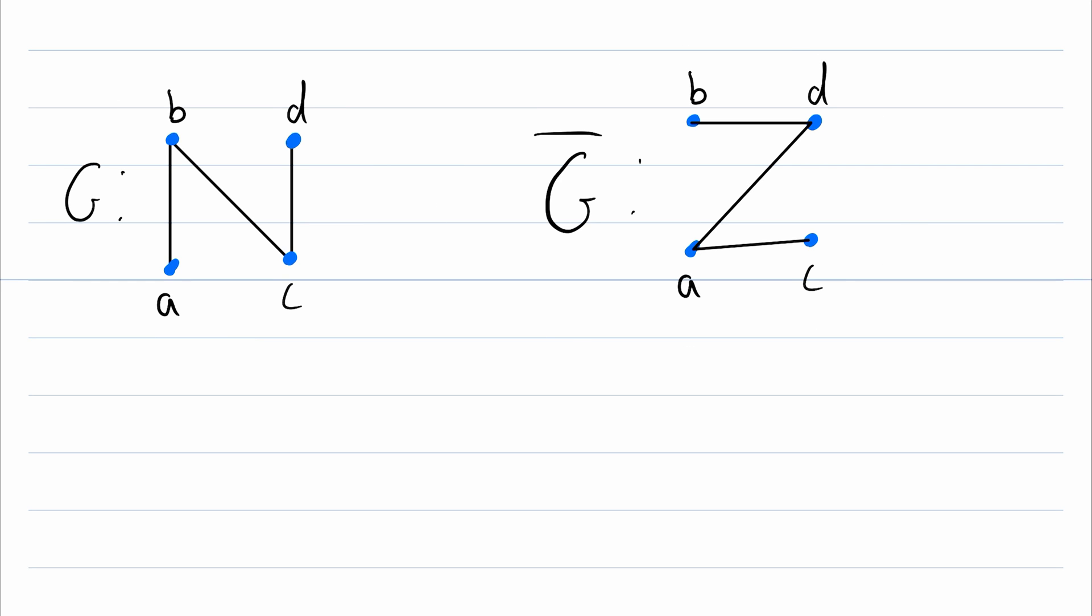Now do you notice anything interesting about these two graphs? They're not equal because they do have different edge sets. B and D, for example, do not make an edge in G, whereas they do in G complement. However, these graphs do have the exact same structure, so they're what we call isomorphic graphs, which you may or may not be familiar with.